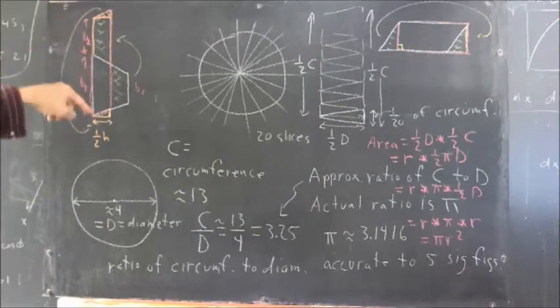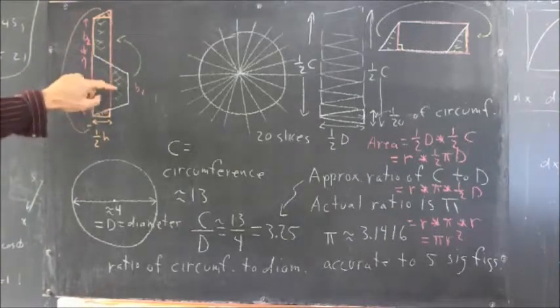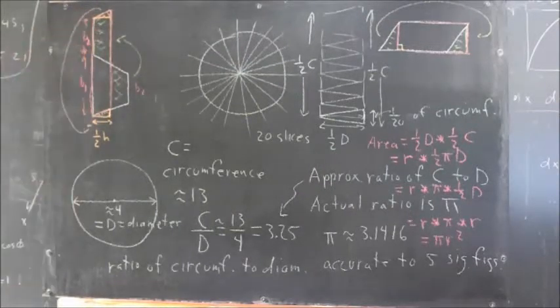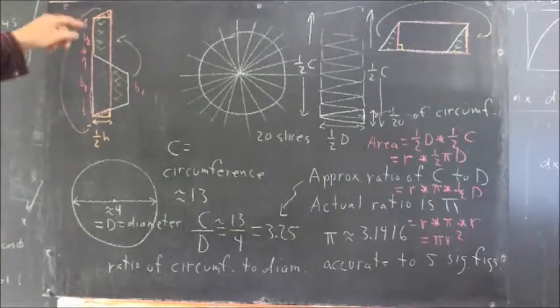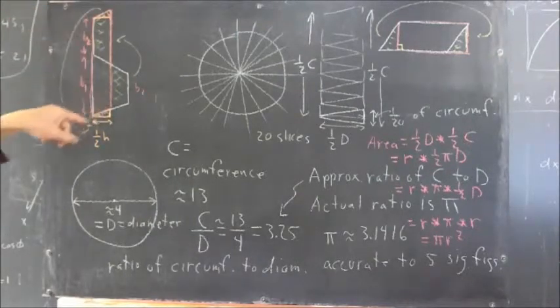Here's our original trapezoid in white. We cut it down the middle. We take this green-shaded piece, we rotate it around up here, and we get the parallelogram that's outlined in red.